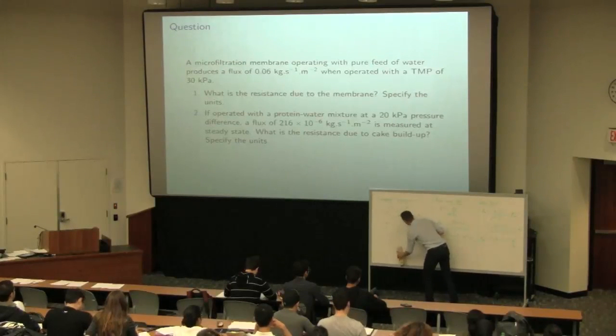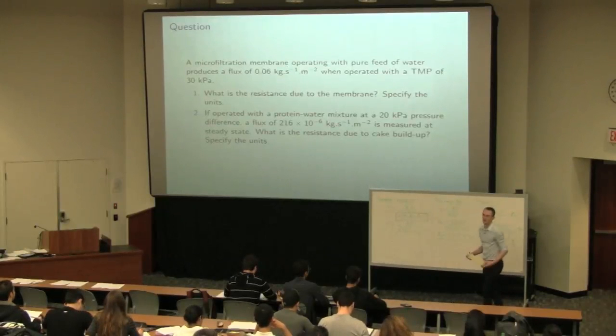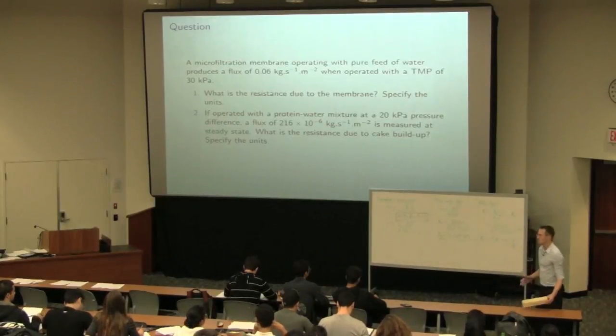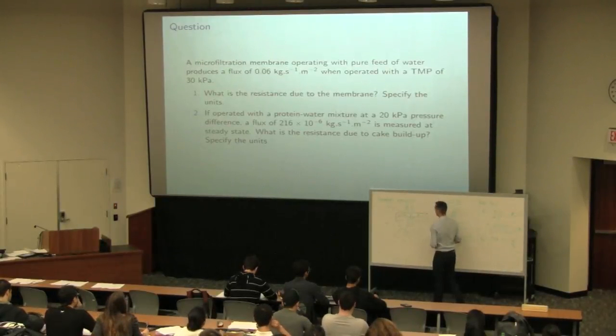So the general thinking here, this entire denominator term is the resistance. And there's two components to the resistance. There's the resistance due to the membrane itself, and then there's the resistance due to the cake building up on the membrane.